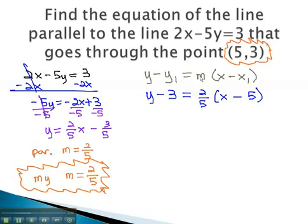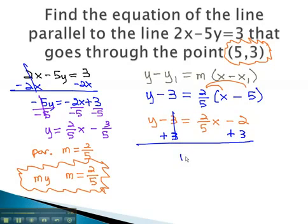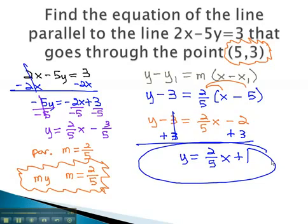To put this in slope-intercept form, we would start by distributing through the parentheses. y minus 3 is 2 fifths x minus 2. We finally get the y alone by adding 3 to both sides. This gives us our final equation, y equals 2 fifths x plus 1. This is our parallel line.